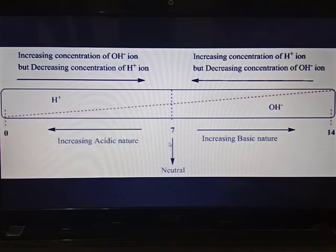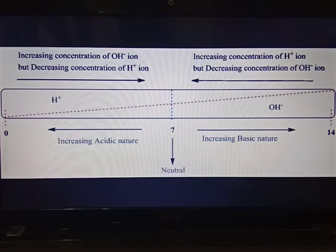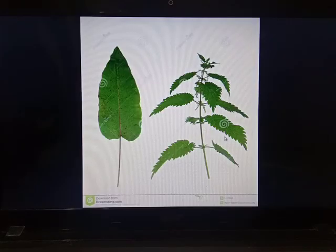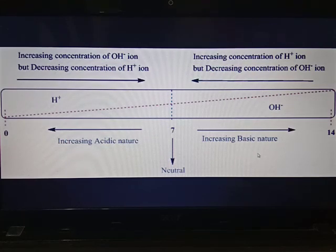As the pH increases from 0 to 14, the nature and concentration of ions changes. pH below 7 is acidic in nature, pH above 7 is basic — that is, alkaline in nature — and solutions with exactly pH 7 are neutral in nature.